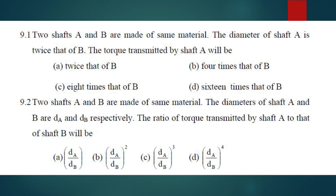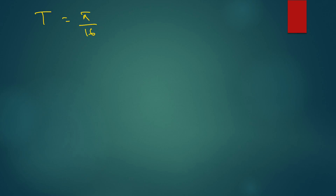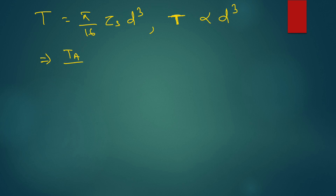The theory is the same. The torque formula for a circular shaft is T = (π/16) × τs × D³, where τs is shear stress and D is the diameter of the shaft, T is the torque. So from here, other parameters remaining same, T is proportional to D³. So TA/DA³ = TB/DB³.